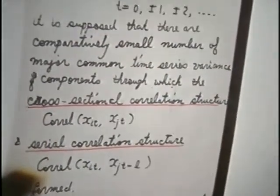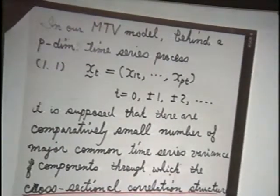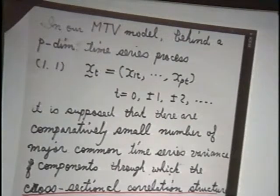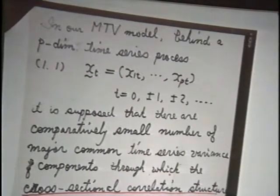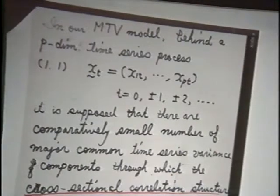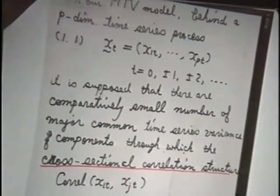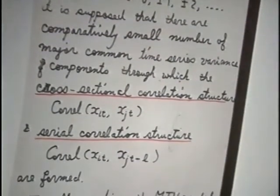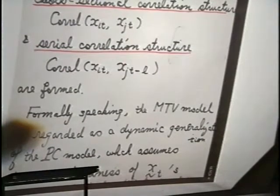Now, in our ARMA model, behind the p-dimensional time series processes, it is supposed that there are comparatively small number of major common time series variance components through which the cross-sectional correlation structure and the serial correlation structure are formed. Formally speaking, the MTV model I'm going to propose is regarded as a dynamic generalization of the principal component model, which assumes the uncorrelatedness of XT's. However, here we allow X to be serially correlated. This also gives a justification for applying the principal component model to time series data.